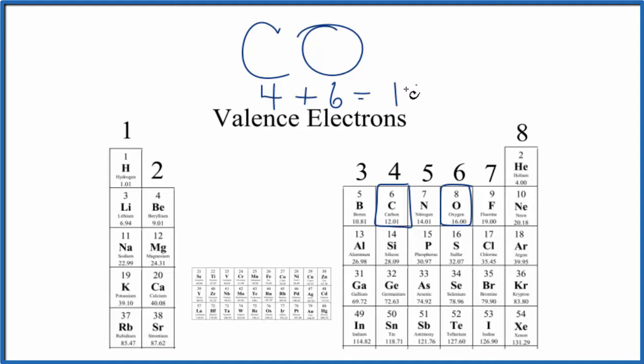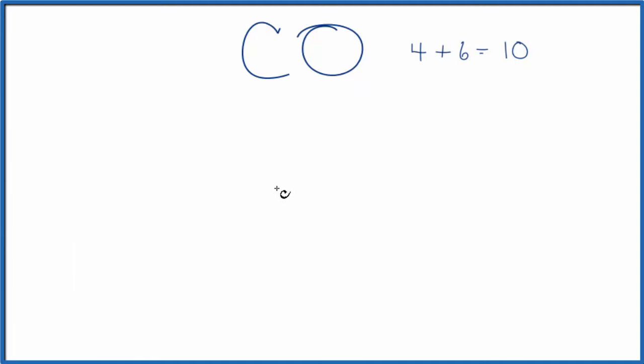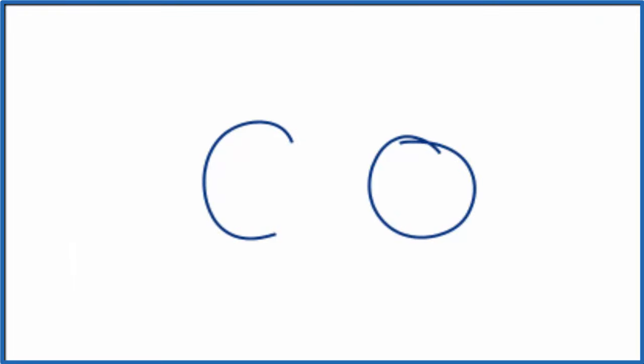Add them up, we have a total of 10 valence electrons for the CO Lewis structure. We'll start by putting the carbon here and then the oxygen. So we have 10 total valence electrons. Let's put two between atoms. That'll form our chemical bond.